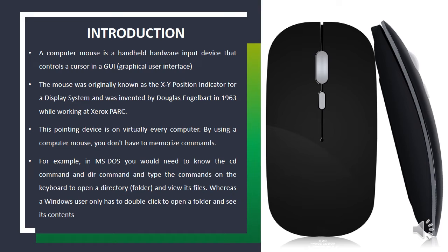Today, this pointing device is on virtually every computer. By using a computer mouse, you don't have to memorize commands. For example, in MS-DOS, you would need to know the CD command and DIR command and type the command on the keyboard to open a directory folder and view its files. Whereas a Windows user only has to double-click to open a folder and see its contents.